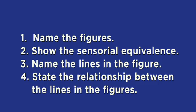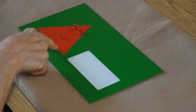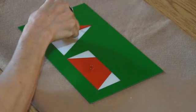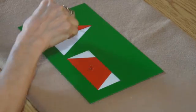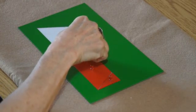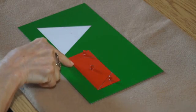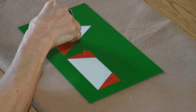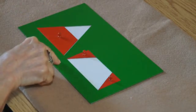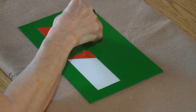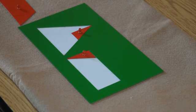Step four, this is where we make a statement of the relationship between the lines in these two equivalent figures. The base of the triangle is equal to the base of the rectangle. The height of the triangle is twice the height of the rectangle. Or we can talk about the rectangle's lines relative to the triangle. The base of the rectangle is equal to the base of the triangle. The height of the rectangle is equal to half the height of the triangle.